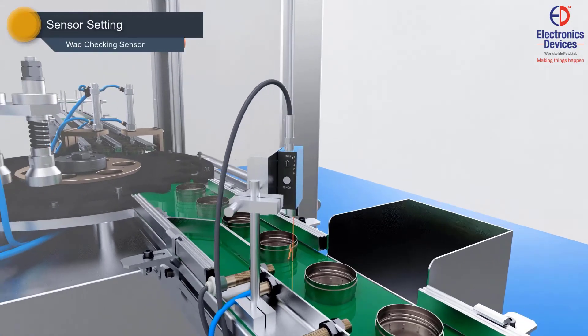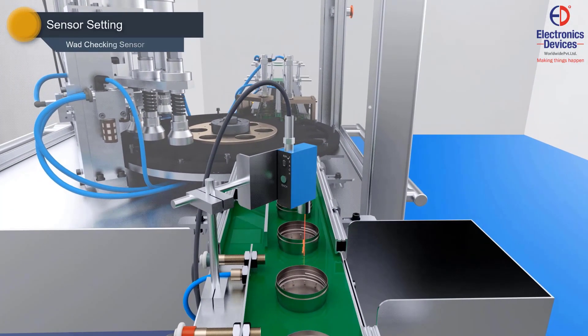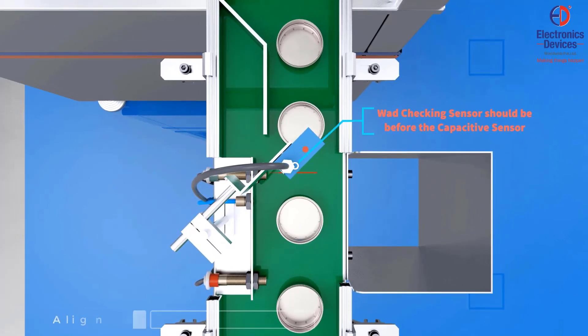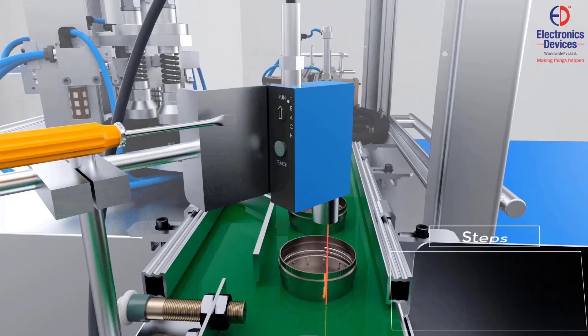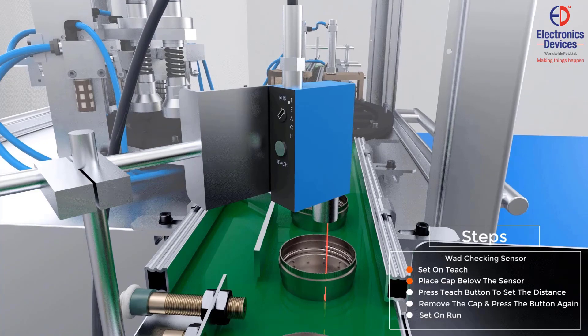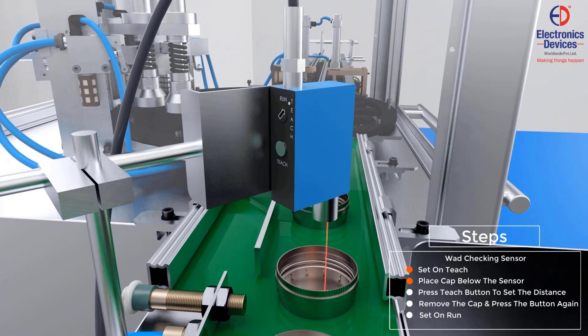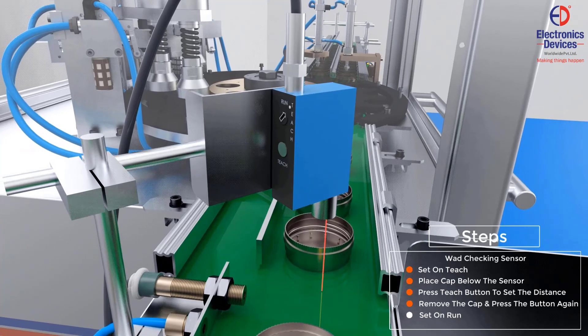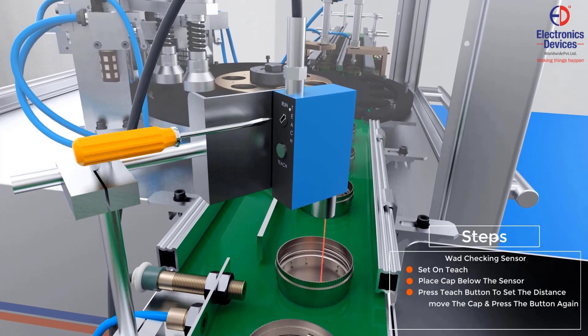Now, set the WOD checking sensor. Align the WOD checking sensor such that it should be before the capacitive sensor. Adjust settings of the WOD checking sensor by pressing teach. Place the cap below the sensor. Press the teach button to set the distance. Remove the cap and press the button again. Set on run.